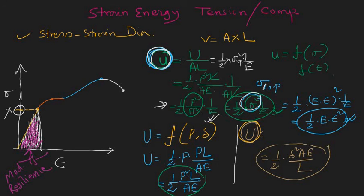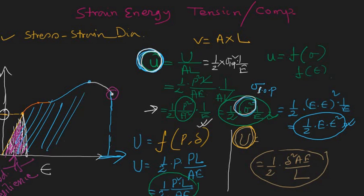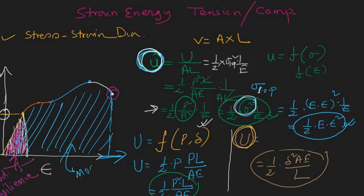If you stress the bar all the way up to the point of rupture, the total energy stored per unit volume is the total area under the stress-strain curve. This total area is known as the modulus of toughness.